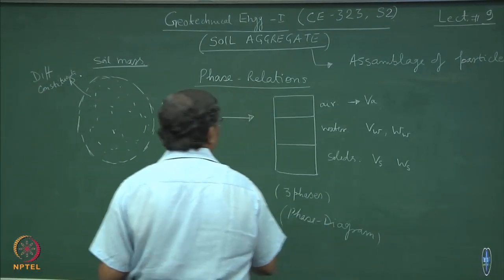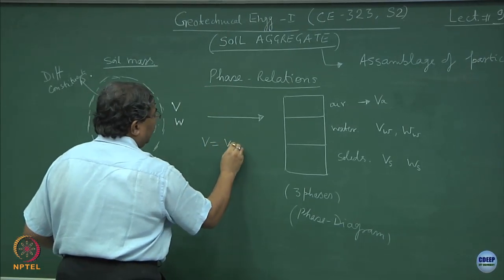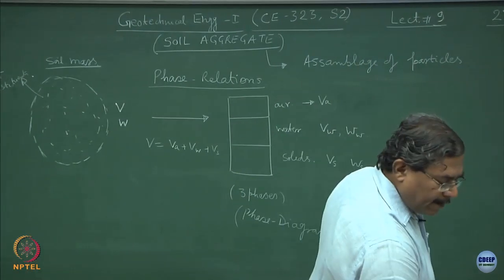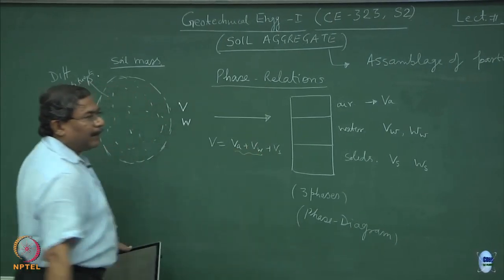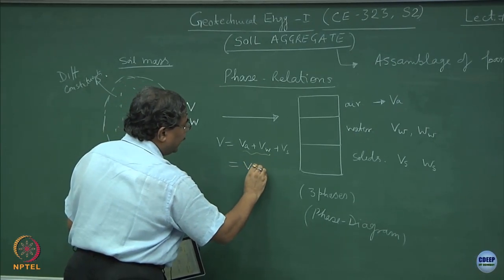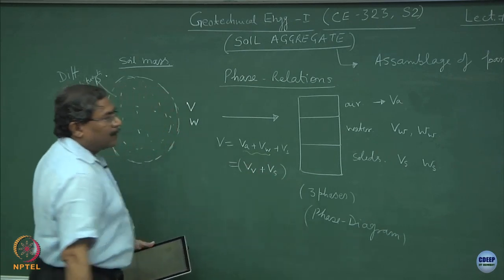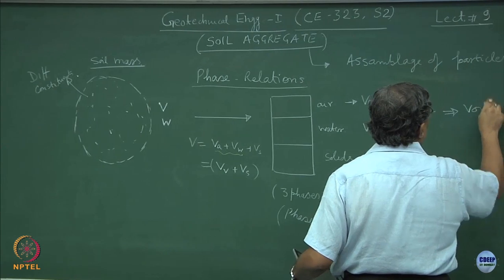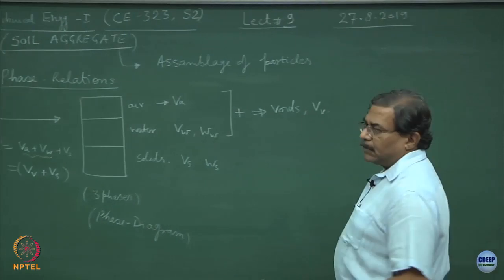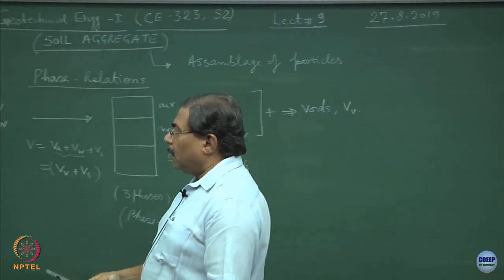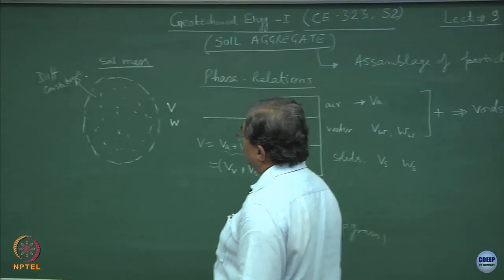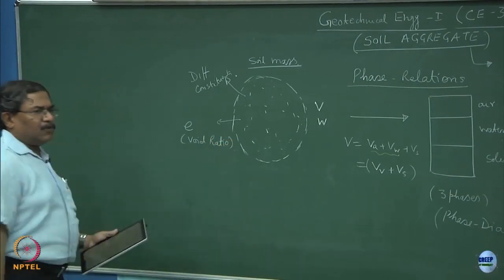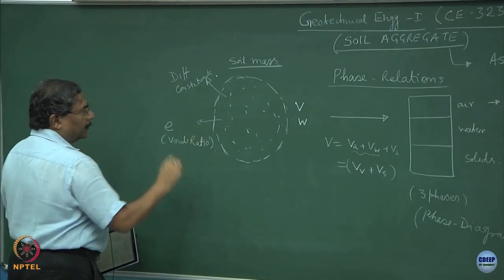I hope you can realize that total volume V equals Va plus Vw plus Vs. And combining air and water together, V equals volume of voids Vv plus volume of solids Vs. So Vv becomes volume of voids.